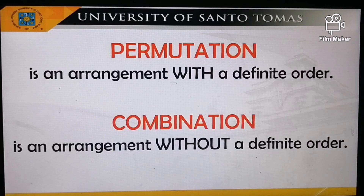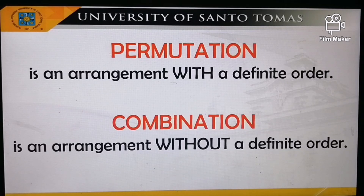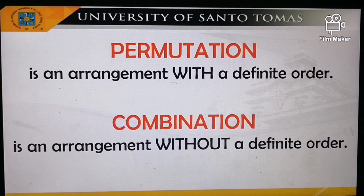First, we must be clear on how permutation is different from combination. When we talk about arrangement which requires a definite order, that means we are talking about permutation. But if there's no specific order, that means we are talking about combination. So an arrangement with a definite order is called permutation, and an arrangement without a definite order is called combination.